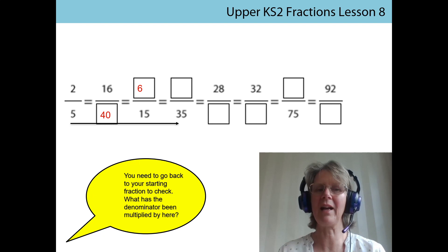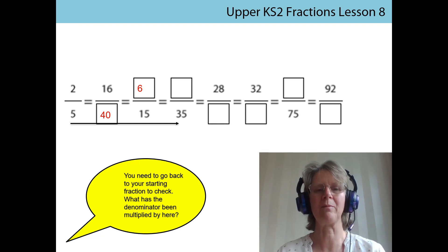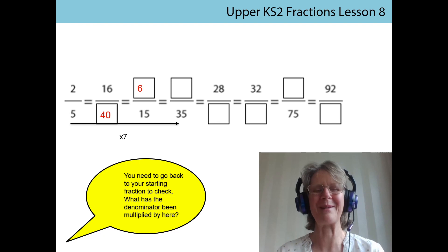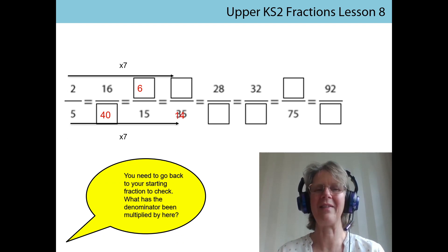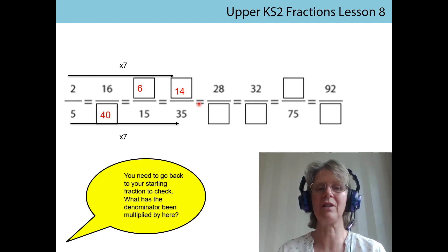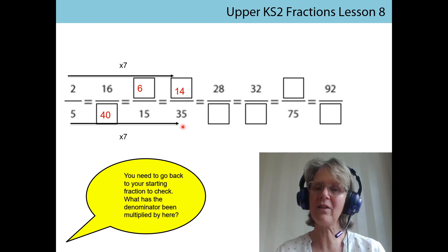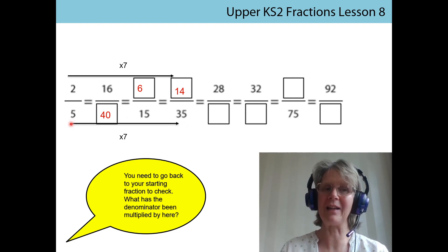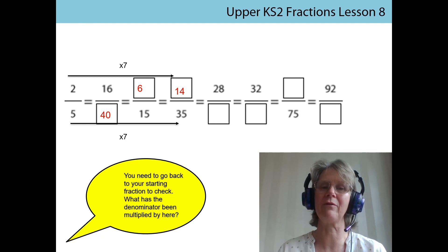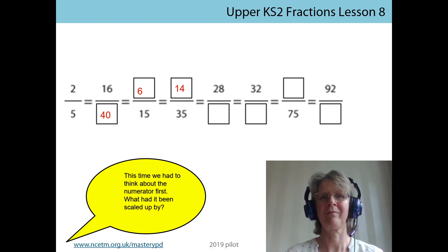I've gone back to the starting fraction again. Let's look at the relationship between five and 35 — you can see that it's multiplying by seven. So we did the same to the numerator, and that gave us a new equivalent fraction of 14 thirty-fifths. So 14 thirty-fifths is in fact the same value as two fifths but with a different appearance.